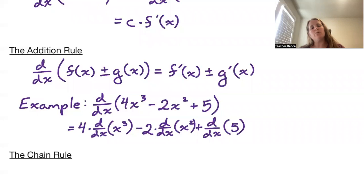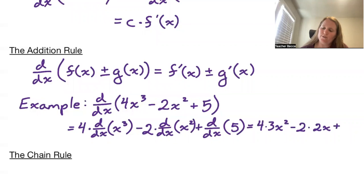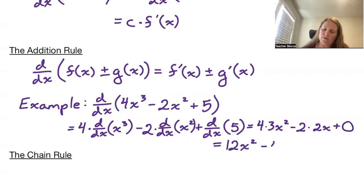By the power rule, x cubed goes to 3x squared. So we have 4 times 3x squared minus 2 times 2x. The derivative of x squared is 2x, and the derivative of a constant is 0. We wind up with 12x squared minus 4x.